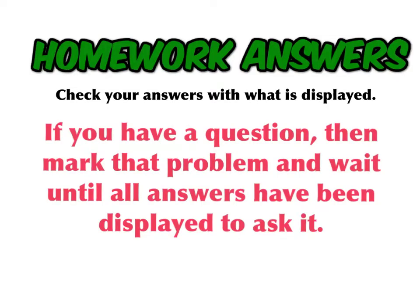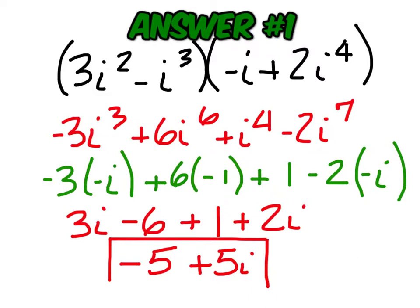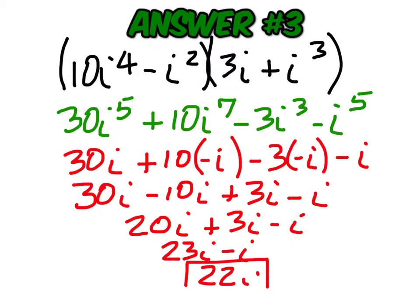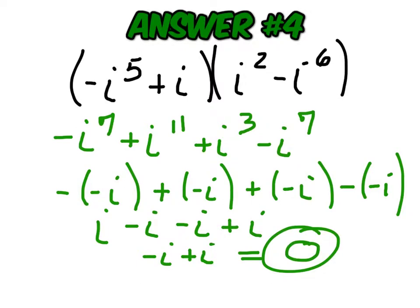Here are the answers. Put a check mark beside the ones that are right. We'll go through some questions after we're finished with the answers. Number 1: negative 5 plus 5i. Number 2: 9 plus 21i. Number 3: 22i. Number 4: 0.